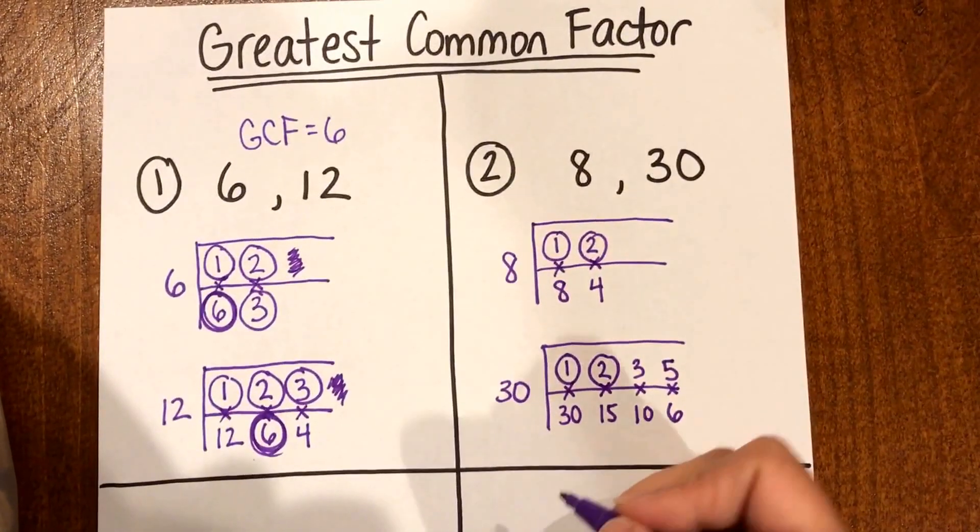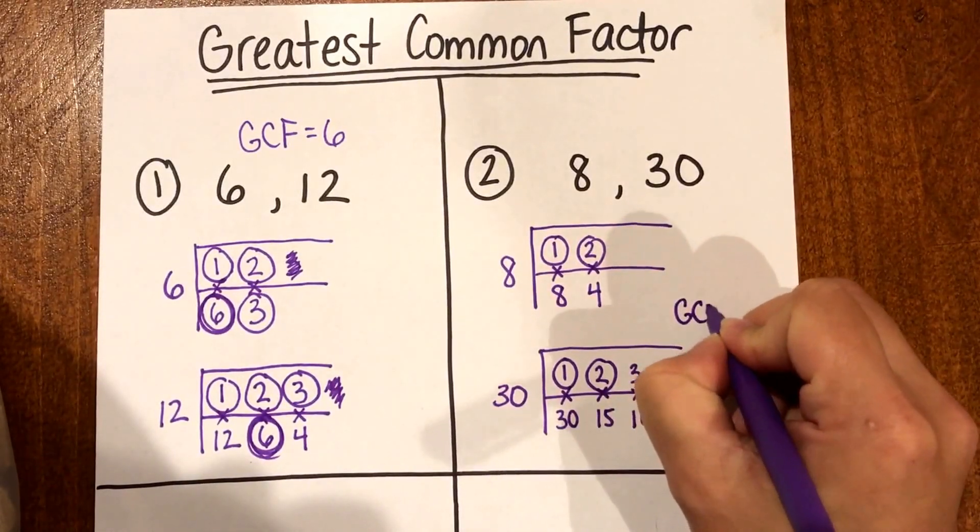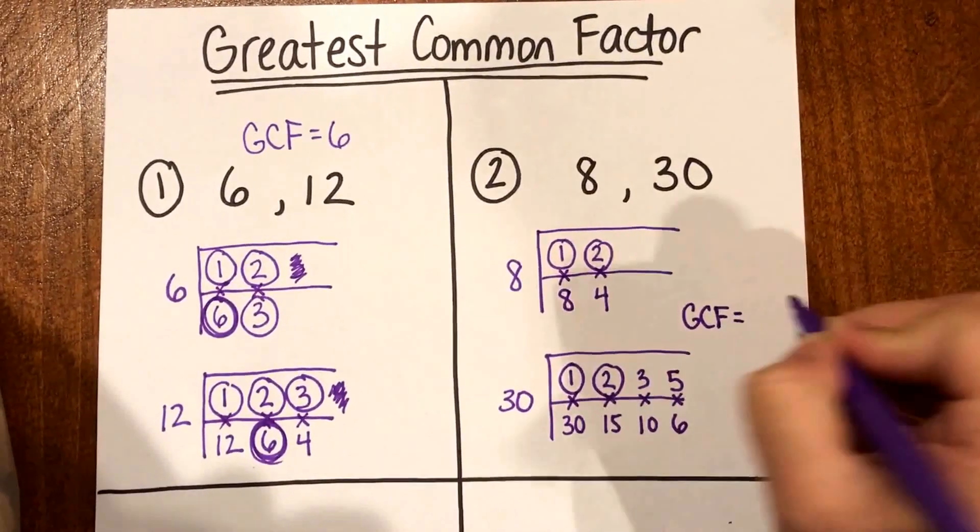So based on my circled common factors I can already see that my greatest or my biggest factor that's the same is 2.